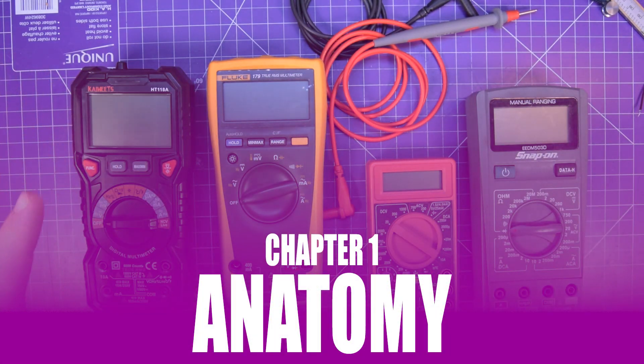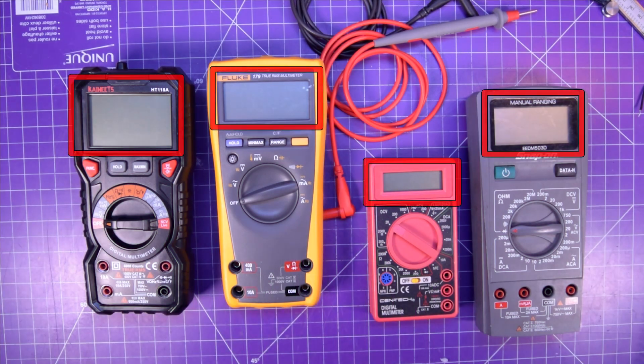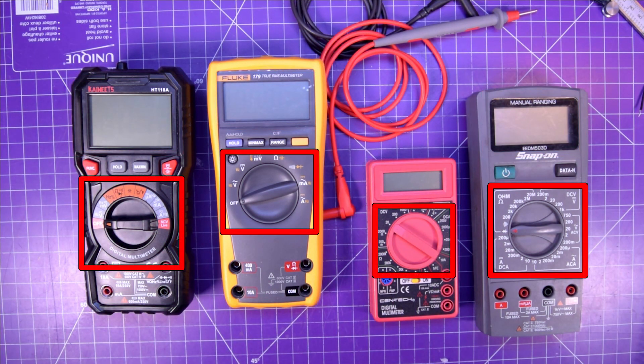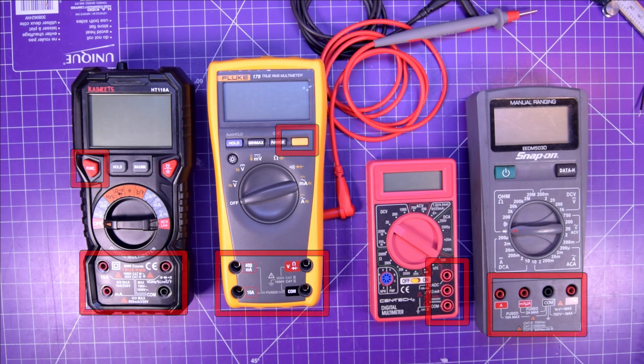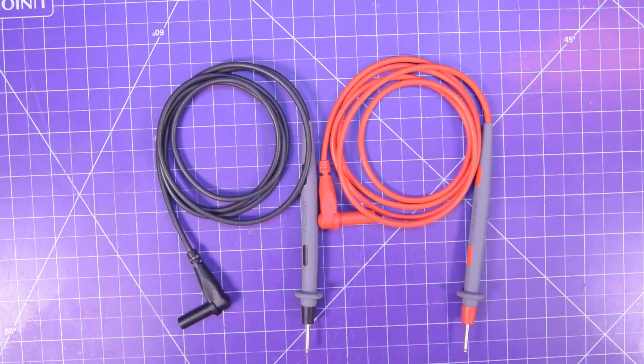Before we get too far into it, we need to know the anatomy of a multimeter. So here you see an LCD, a range switch, a second function switch, some multimeters don't have this, two, three, or four jacks for connecting your multimeter leads and the leads themselves.